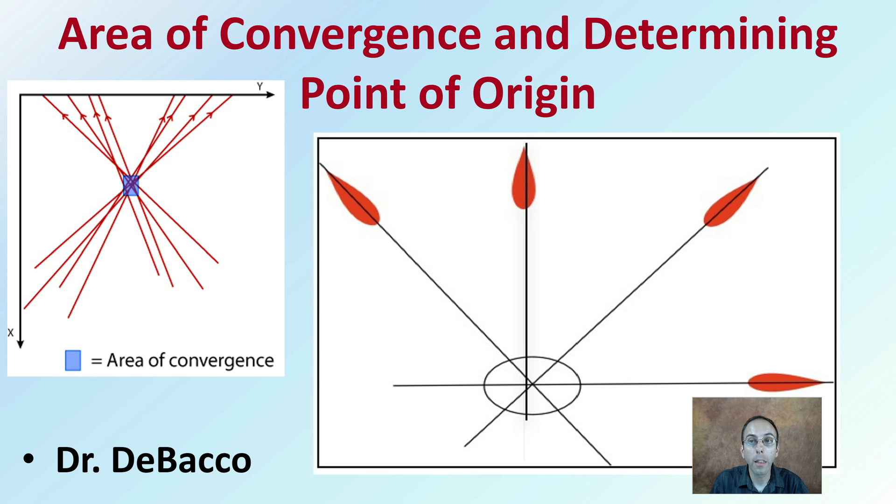Here we're going to look at the area of convergence and determining the point of origin, which is very important when analyzing cast-off blood splatter or blood splatter in general, as far as where it may converge and where that point of origin may exist.